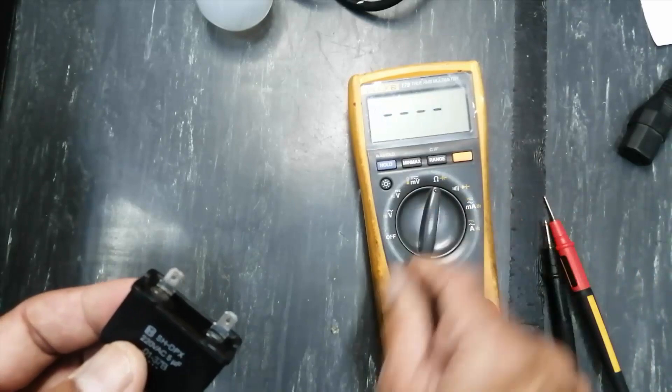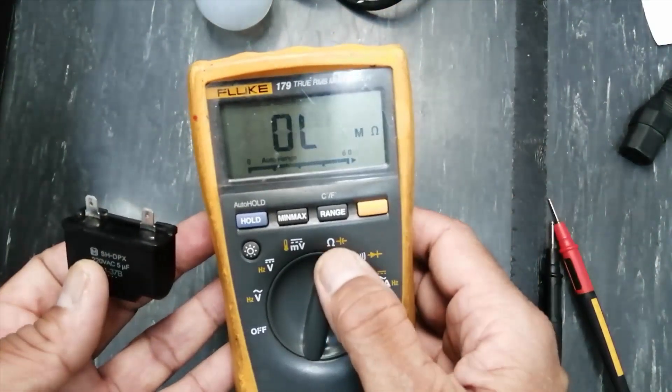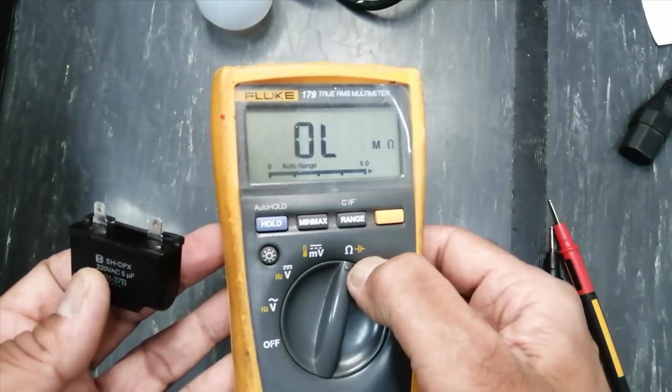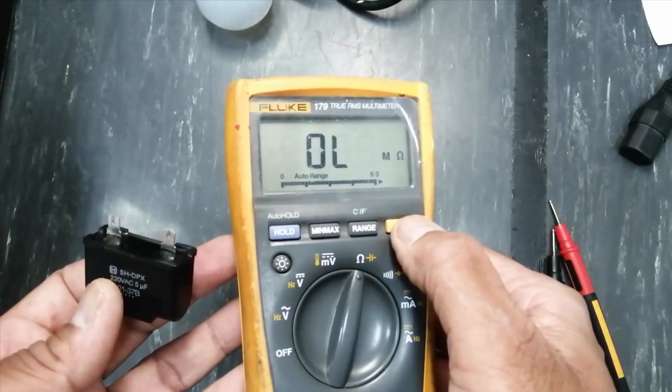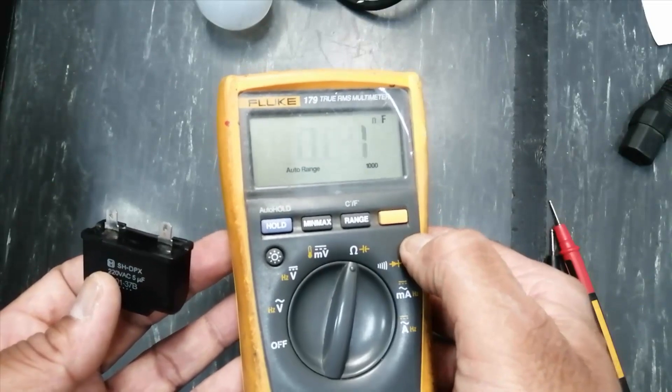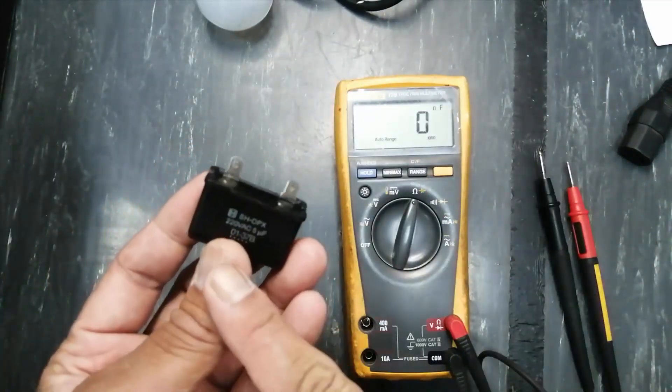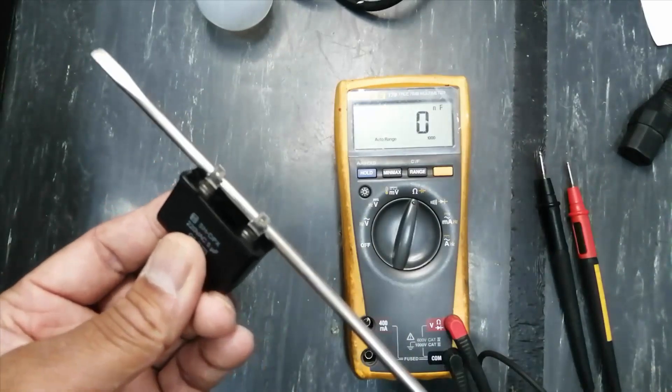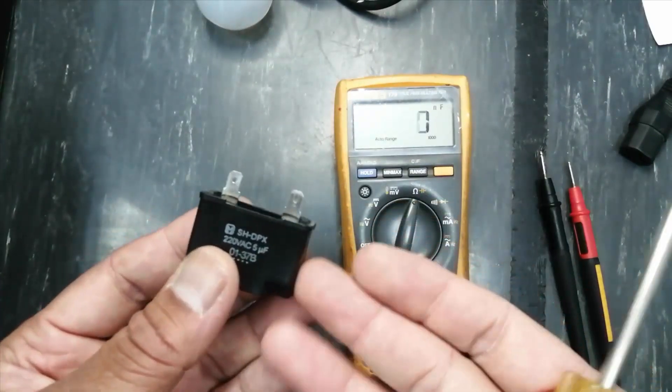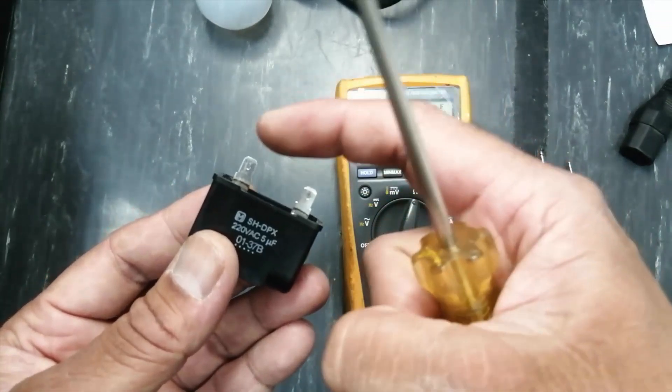Set the multimeter to capacitance range. Now it is in ohm range. For using the capacitor function, press the yellow button. Okay, it's now in capacitance range. Before testing a capacitor, never touch the poles to the capacitor. Sometimes it is fully charged—maybe 220 volts charged or it has some voltage.